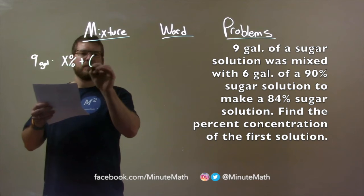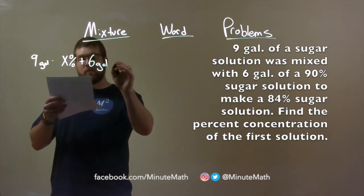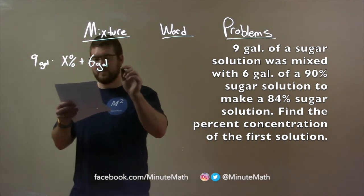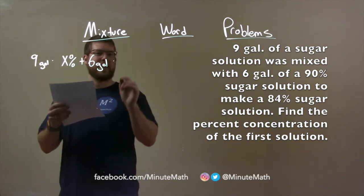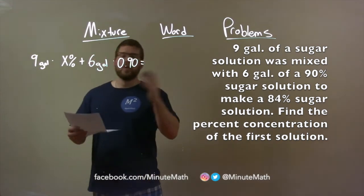We're combining that with 6 gallons, which we know to have a concentration of 90% sugar solution. Multiply that as a decimal: 0.90.